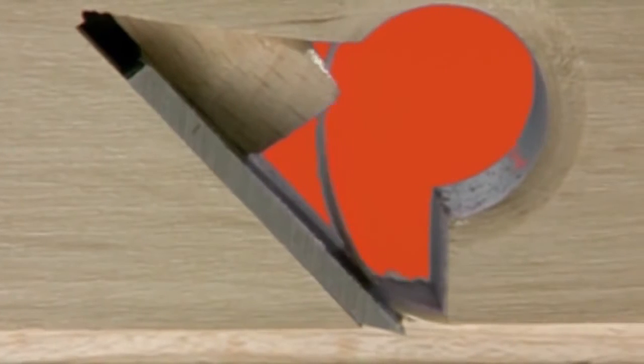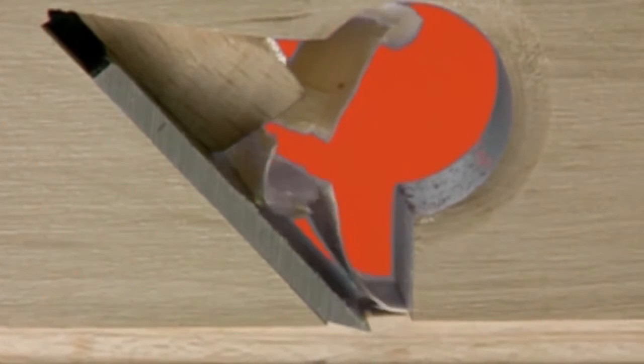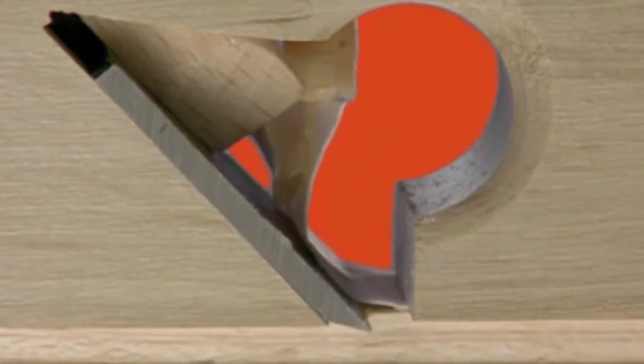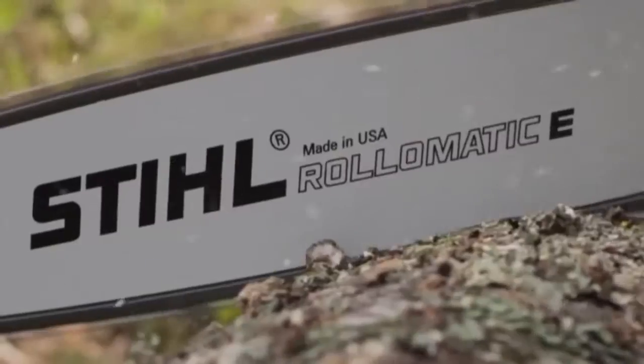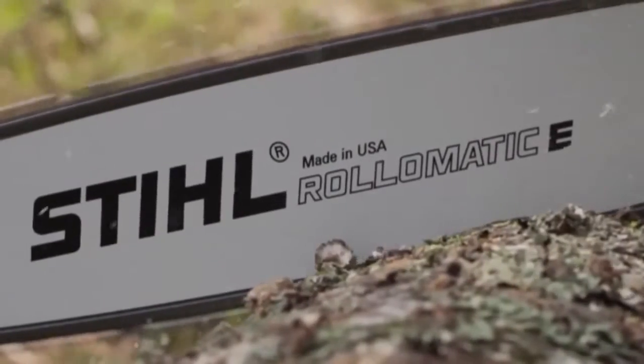The action of a saw chain can be compared with the cutting action of a wood plane. The top plate acts as the plane's iron and the depth limiter acts as the sole. A section of wood the height of the depth limiter setting is lifted up, sliced off by the cutting edge, and transported by the following teeth and then later thrown out. At chain speeds of approximately 60 feet per second, some 500 teeth cut into the wood every second.